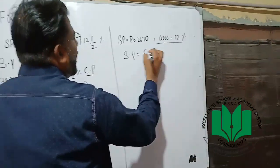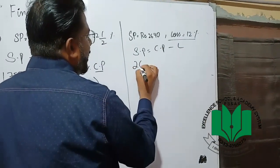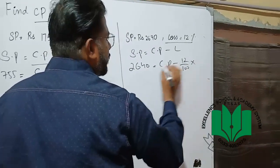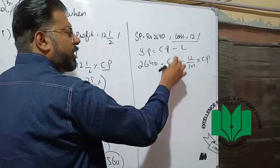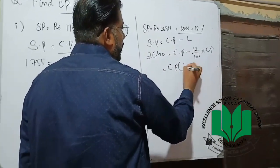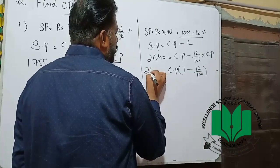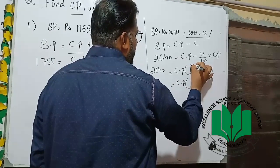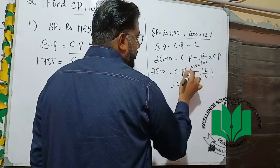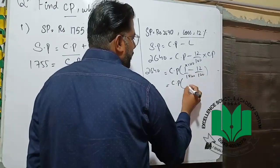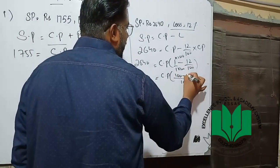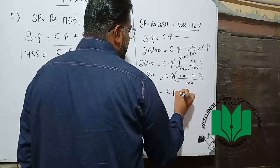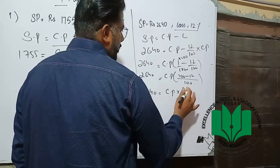Loss — sell price minus cost price as it is, loss is 12 percent of cost price. Cost price given or not given — always put it in mind. One minus 12 by 100, into 2640. Nothing is not one here — 100 minus 12, so 100 is gone. 2640 into 100 minus 12 — 2640 times 88.